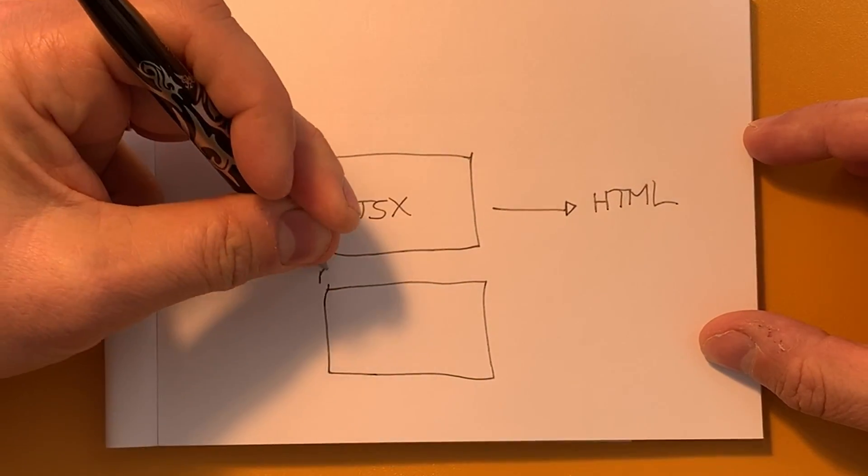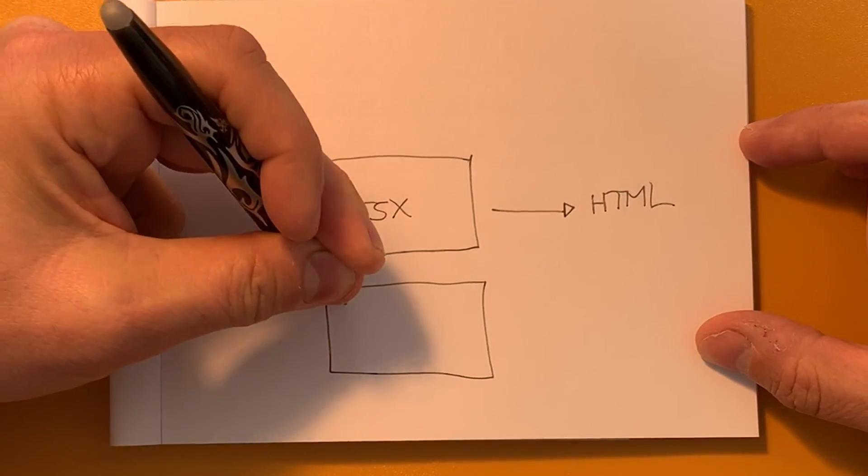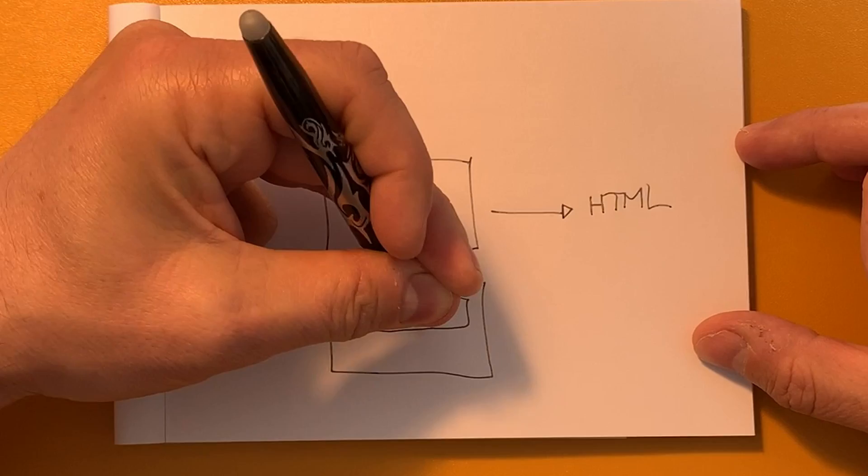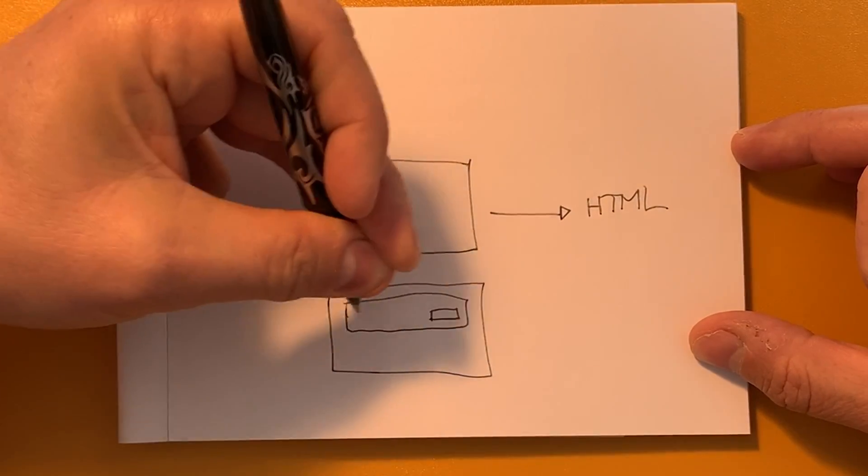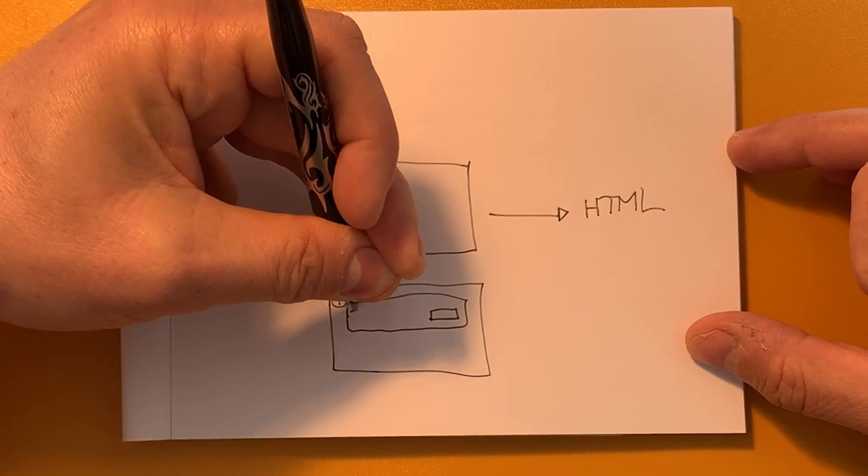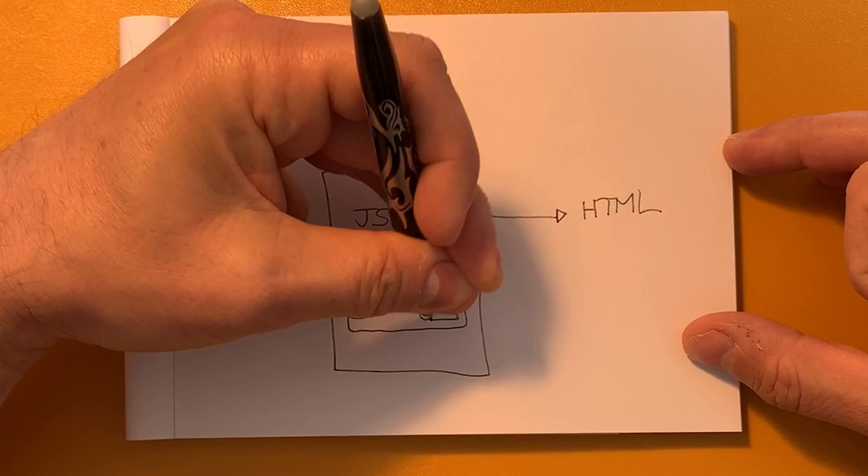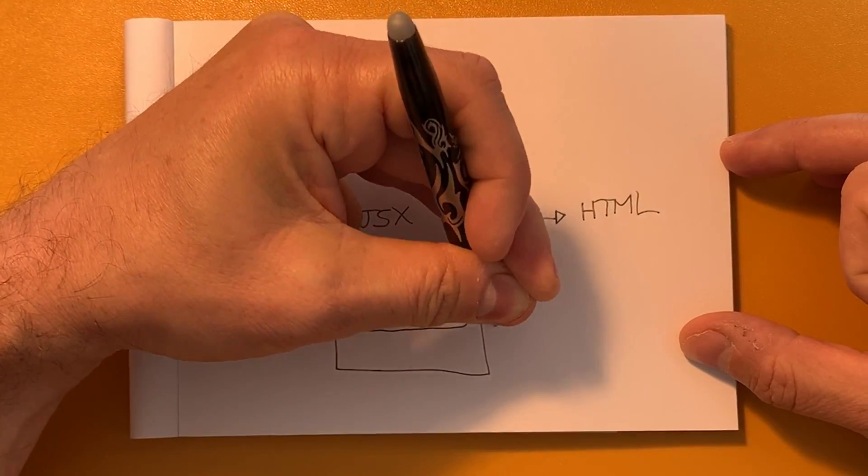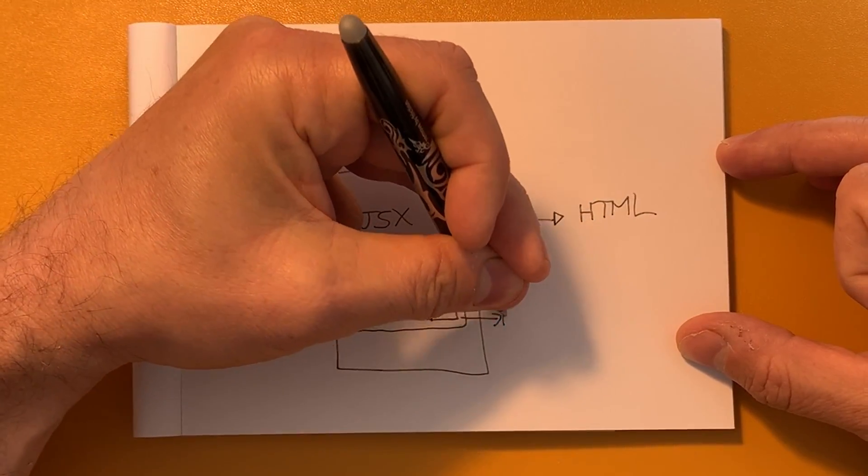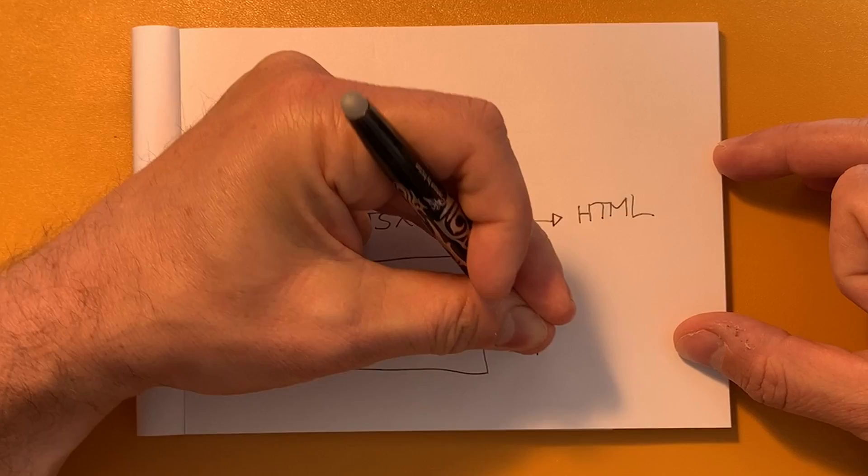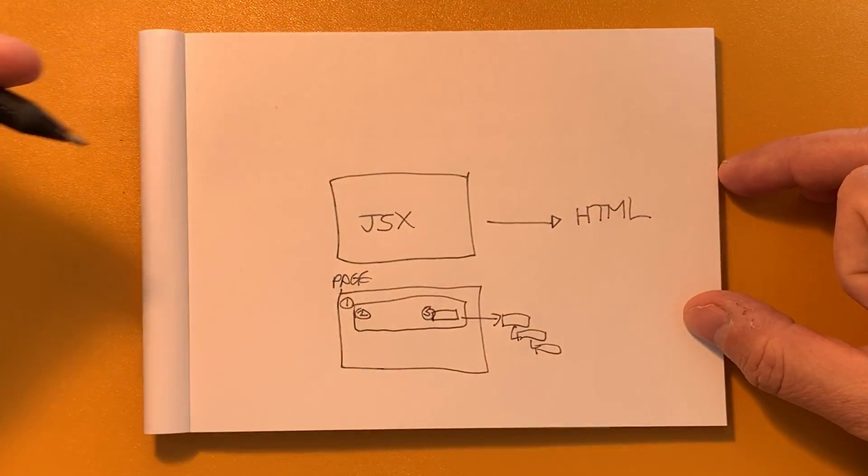For example a page component may contain paragraphs, buttons, panels, each one being a component that can then contain further components. The benefit of this architecture is it allows us to break up a huge application into very simple small components.